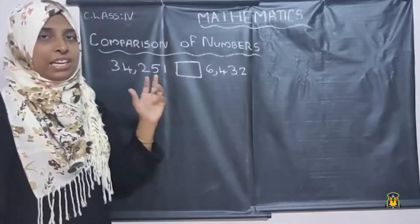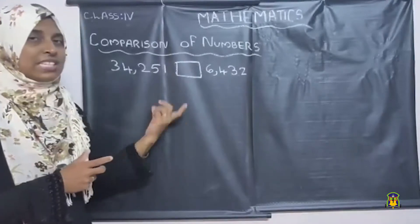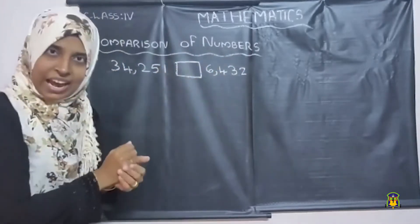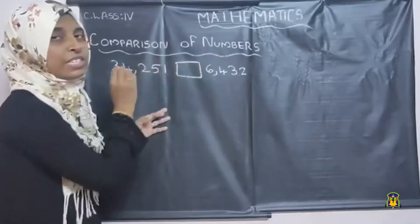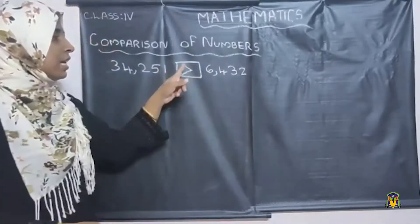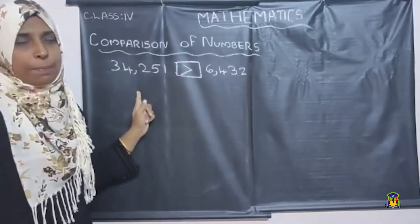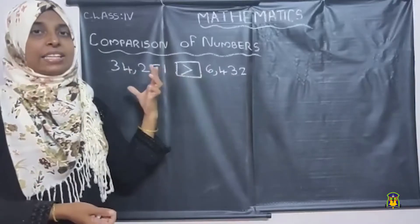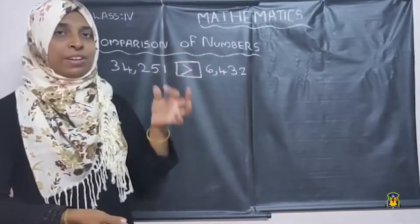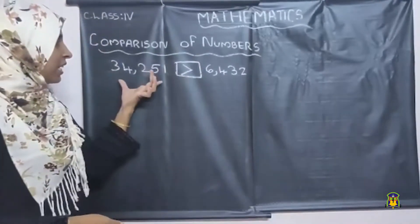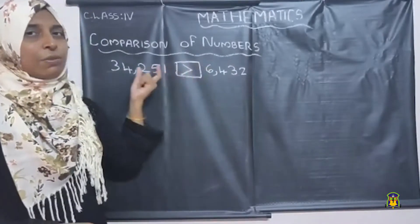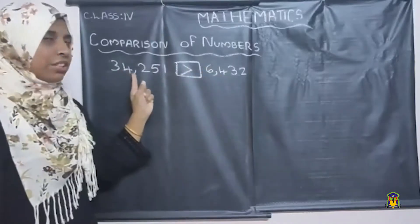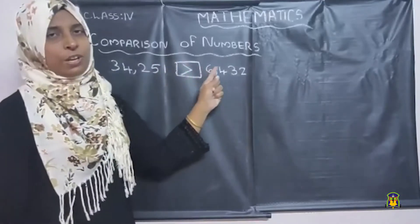The number of digits are different in both numbers. If the number of digits are different, which one will be the greater one — five-digit or four-digit? Yes, the five-digit number will be the greater one. We use the greater than symbol, where the open side should face towards the greater number and the closed side should face towards the smaller number. So we read this as: 34,251 greater than 6,432.